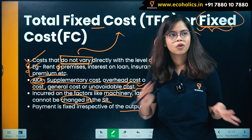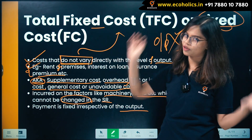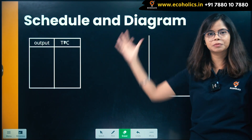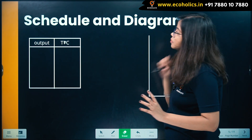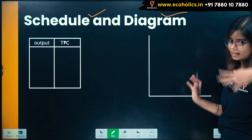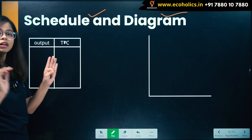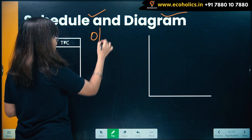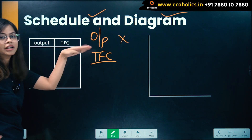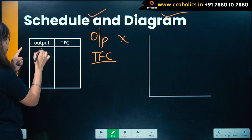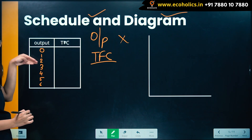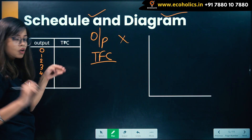The last point: payment is fixed irrespective of the output. Whether output is happening or not, you have to bear the cost — that is your total fixed cost. Now let's draw the schedule and diagram to understand it more clearly. Output increases from zero, one, two, three, four, five, six — but you have to bear the total fixed cost regardless.